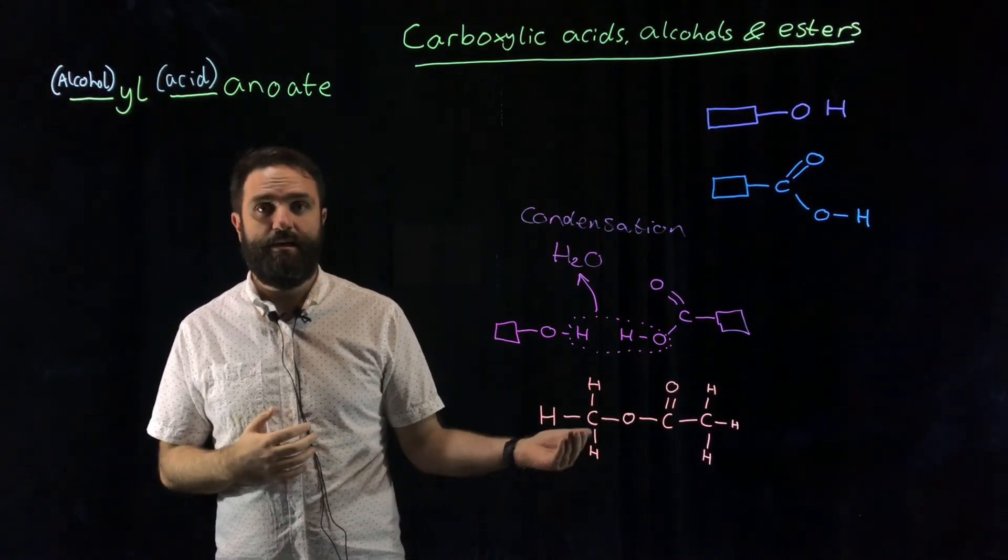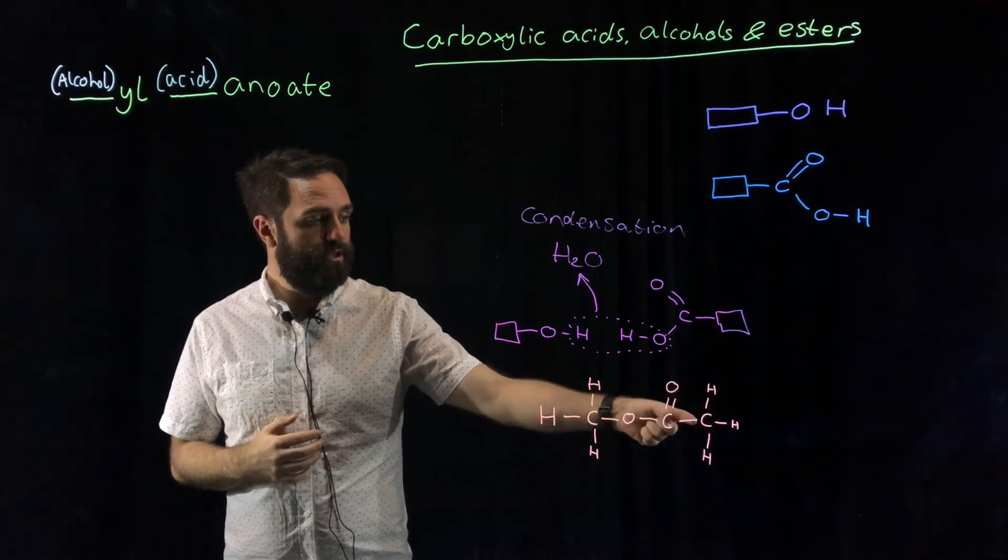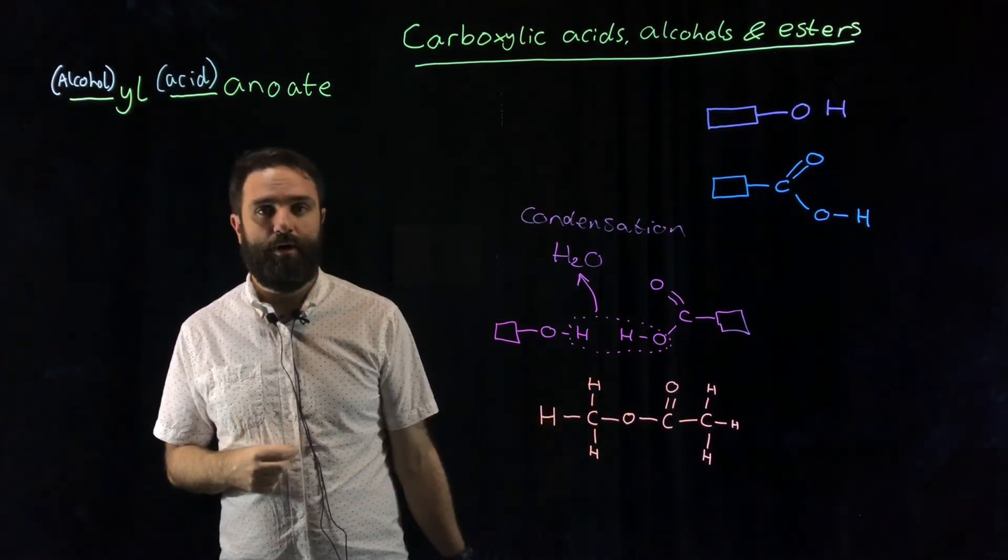If you're not sure which side came from the carboxylic acid and which side came from the alcohol, look for the double bond. The double bond tells you the carbon chain that was the carboxylic acid. The one without the double bond was the alcohol.